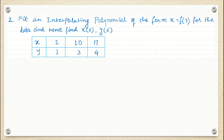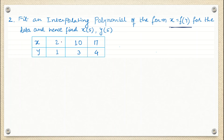The next question asks for an interpolating polynomial of the form x equals f(y) for given data, and hence find x at y equals 5 and y at x equals 5. They have not specified which interpolating polynomial to use. Lagrange's interpolating polynomial can be used whether the gap between x values is uniform or not, so we use Lagrange's method here.